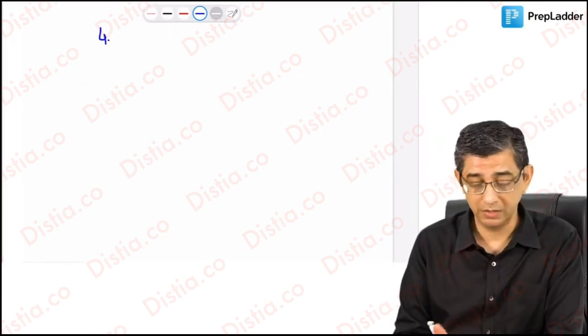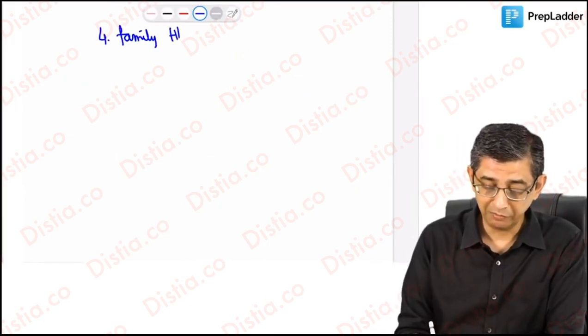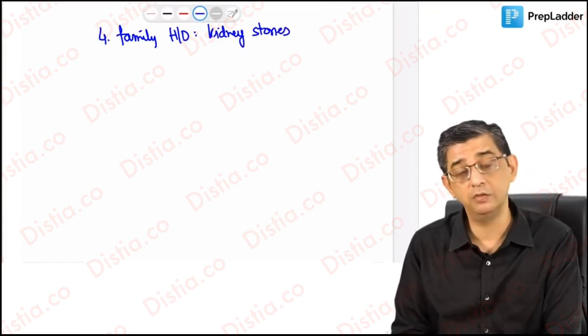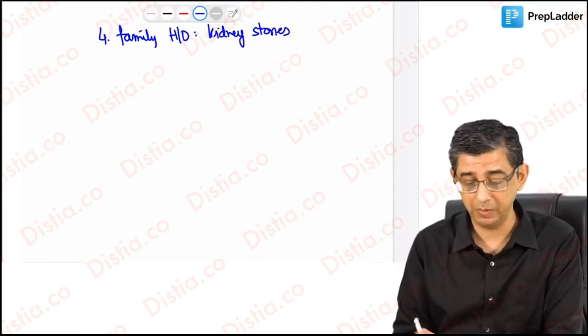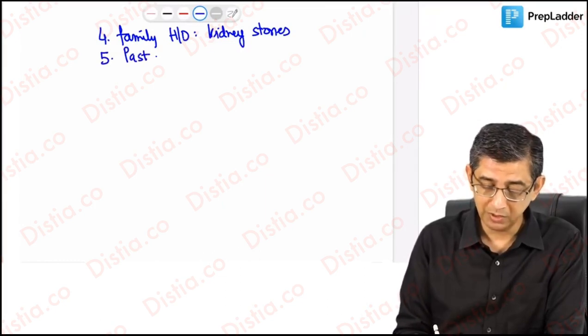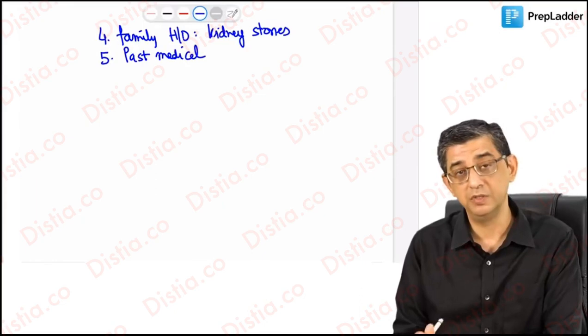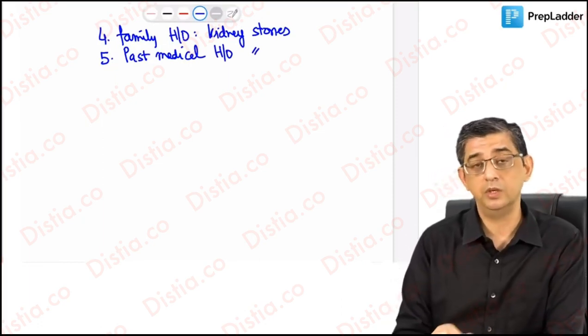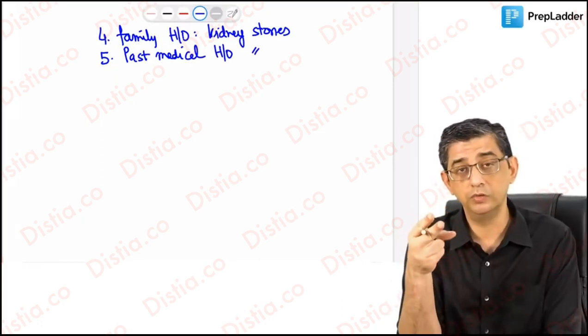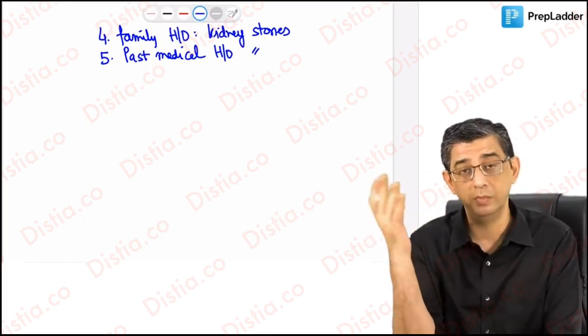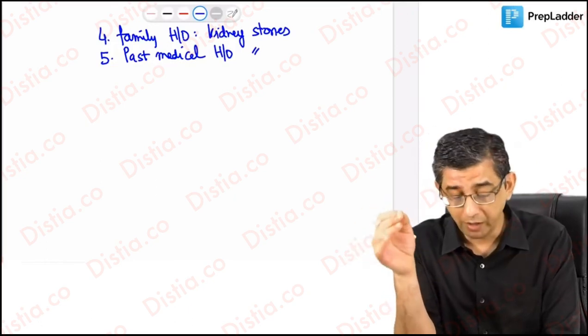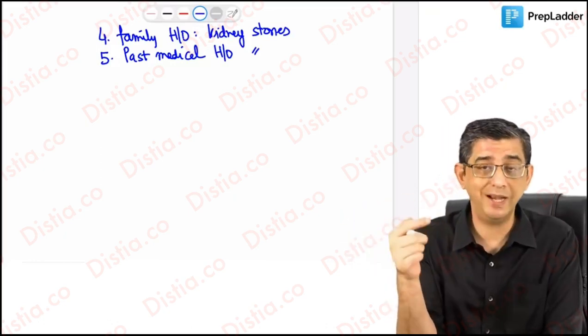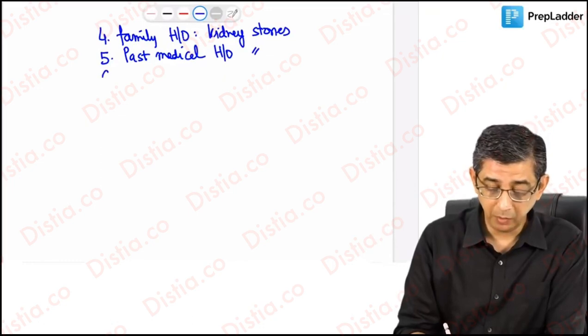In MEN1, the pancreatic adenoma will be Zollinger-Ellison syndrome, and a combination of Zollinger-Ellison and hypercalcemia is a disaster because more calcium will cause more acid production. Because these tumors can co-exist, it is important that you will be asking this person for family history of kidney stones. There's a possibility that a sibling might be having a similar problem or the parent might have suffered from a similar problem. Kidney stones point to hypercalcemia.